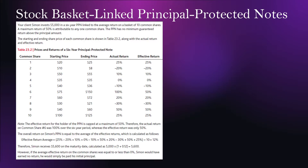You also have stock basket-linked PPNs and these are often used with a performance cap. Say there is a performance cap of a 50% return — if the actual return is ever above 50% you'll be capped out and only get 50%. You take the average of all of the effective returns and that will be the return on your PPN.